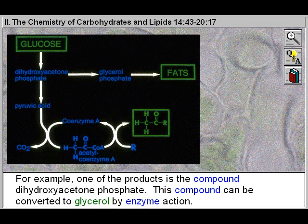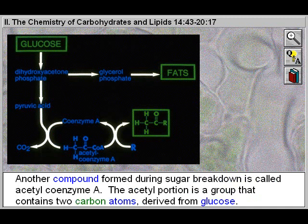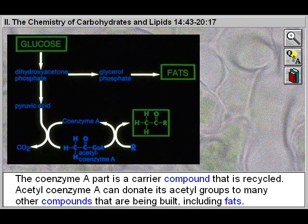Glycerol forms the backbone of fat molecules for storage, and related compounds that are important in building membranes. Another compound formed during sugar breakdown is called acetyl coenzyme A. The acetyl portion is a group containing two carbon atoms derived from glucose, while the coenzyme A part is a carrier compound that is recycled.